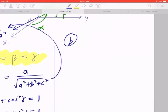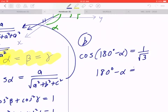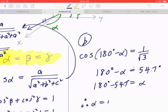you're essentially calculating the cosine of 180 degrees minus alpha, which equals one over root three. So again, when you work this out, 180 degrees minus alpha is going to be approximately 54.7 degrees. You can bring negative alpha to the right. That becomes positive alpha. You can bring 54.7 degrees to the left, which means you're now subtracting. So therefore, alpha or beta or gamma is going to be approximately 125.3 degrees.